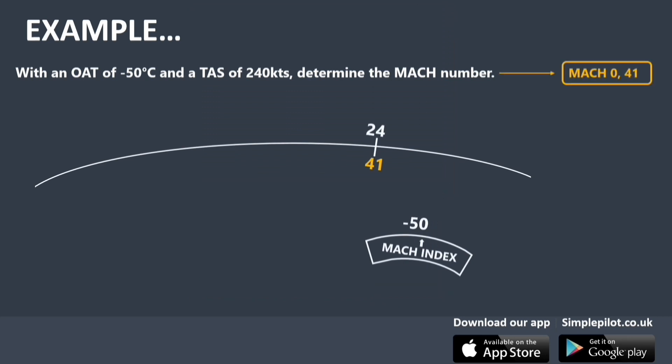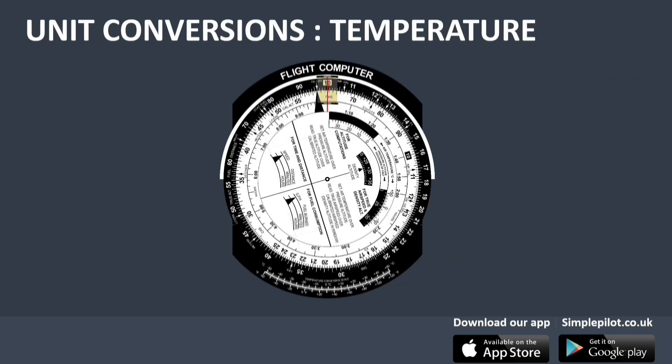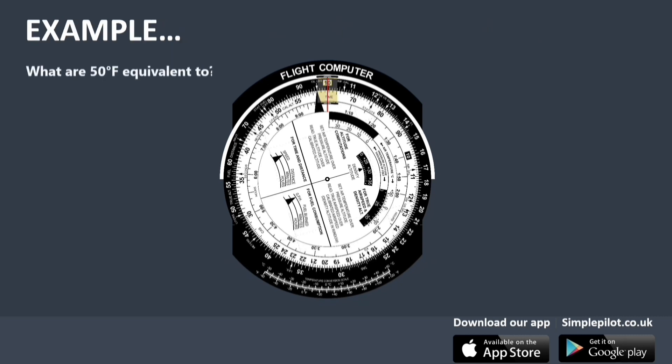Let's move on to the last case of unit conversion: temperature conversion. Conversion from degrees Fahrenheit to Celsius and vice versa is done through a fixed scale at the bottom of the fixed disk — we just read the converted value directly. For example, to convert 50 degrees Fahrenheit to Celsius, look for 50 on the Fahrenheit scale and read the corresponding value of 10 degrees Celsius.